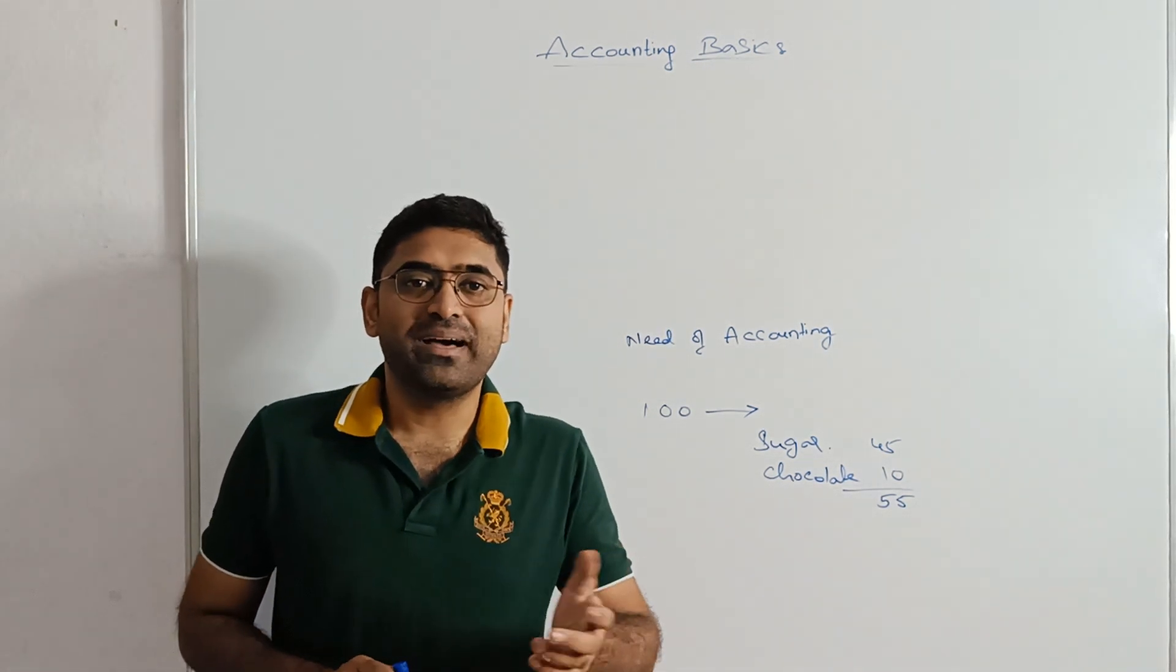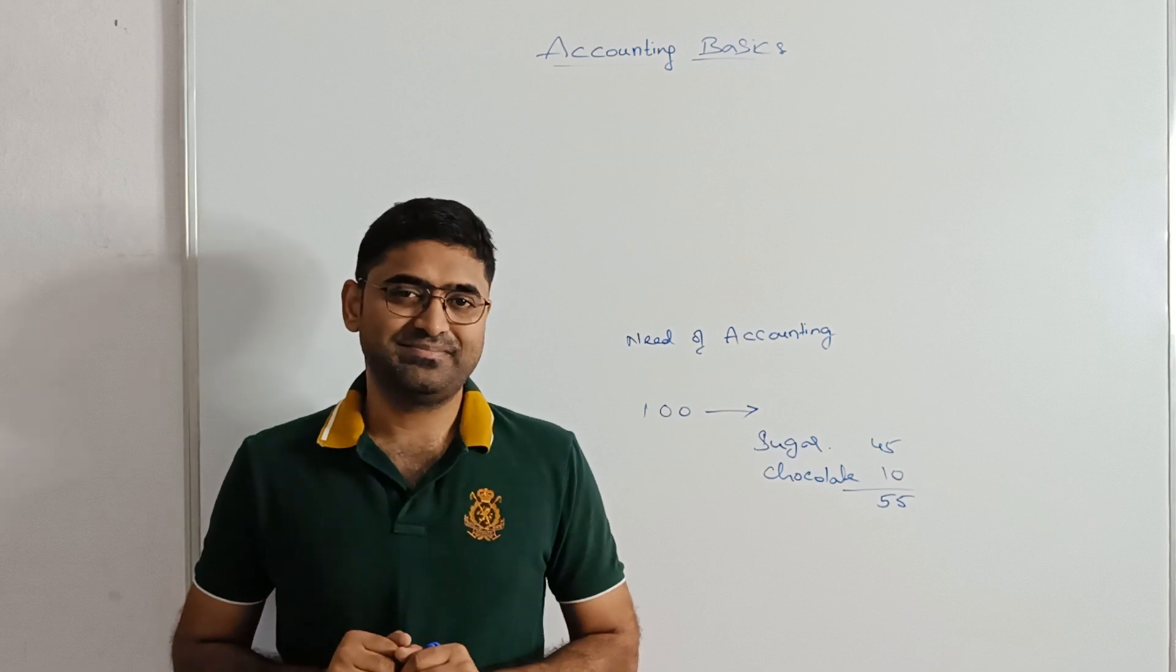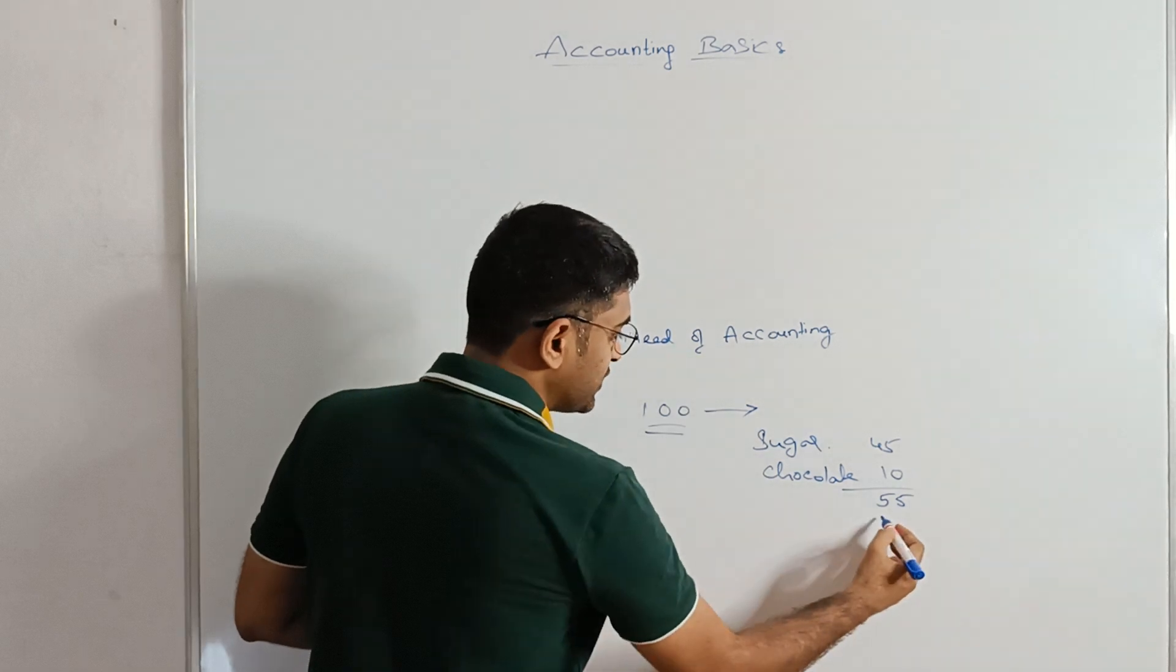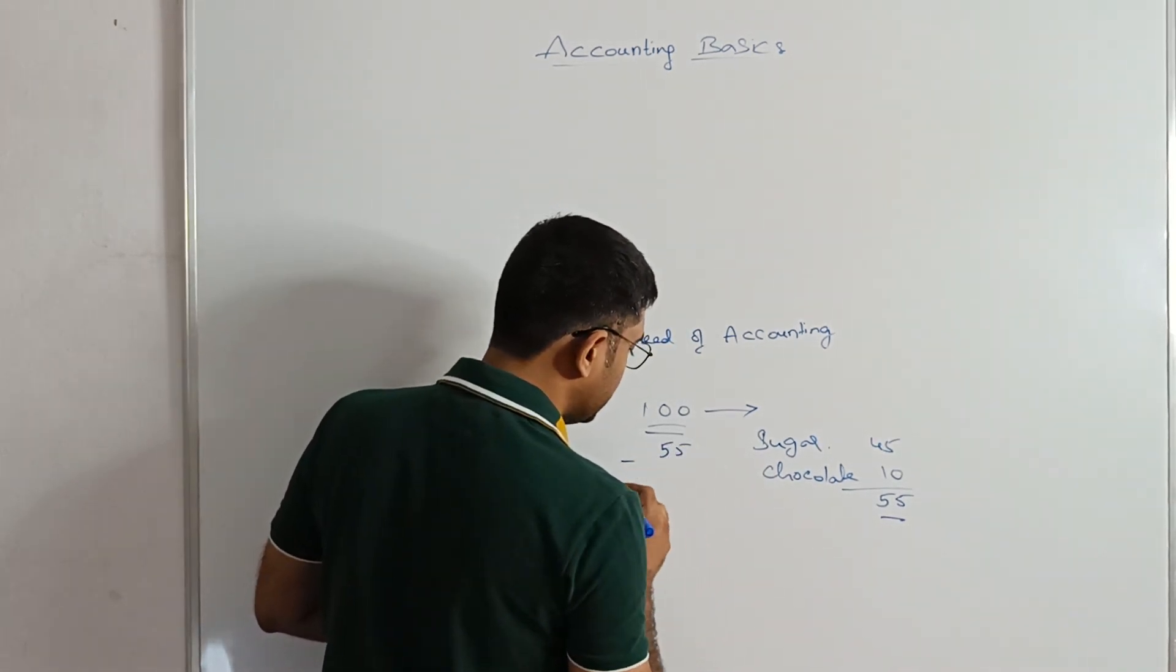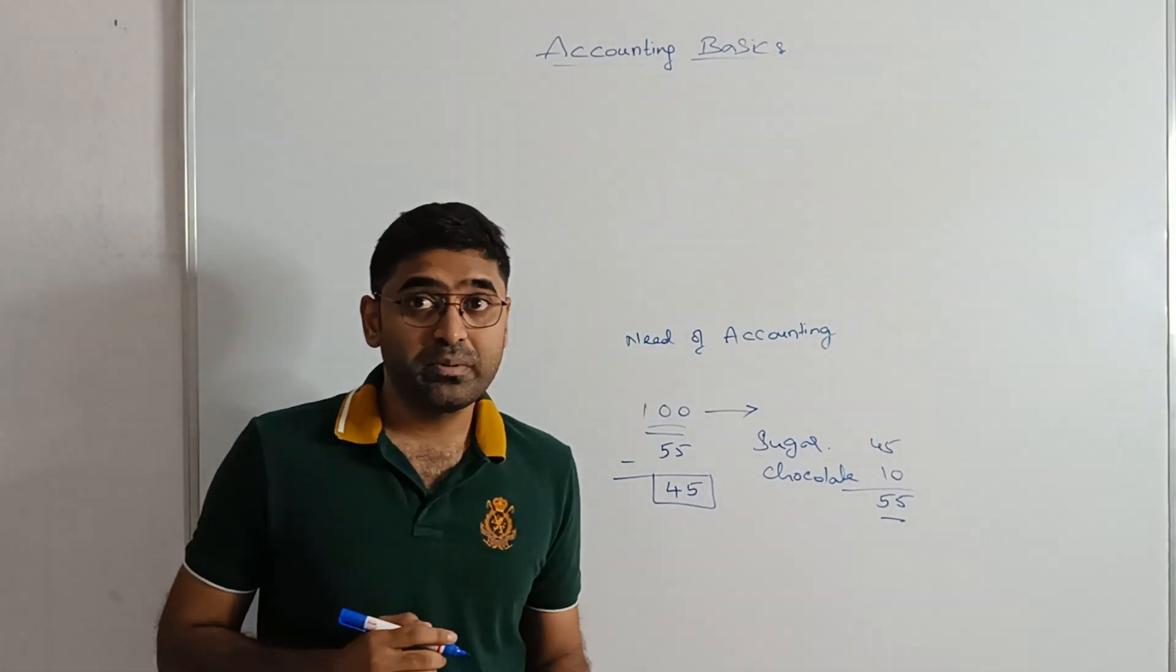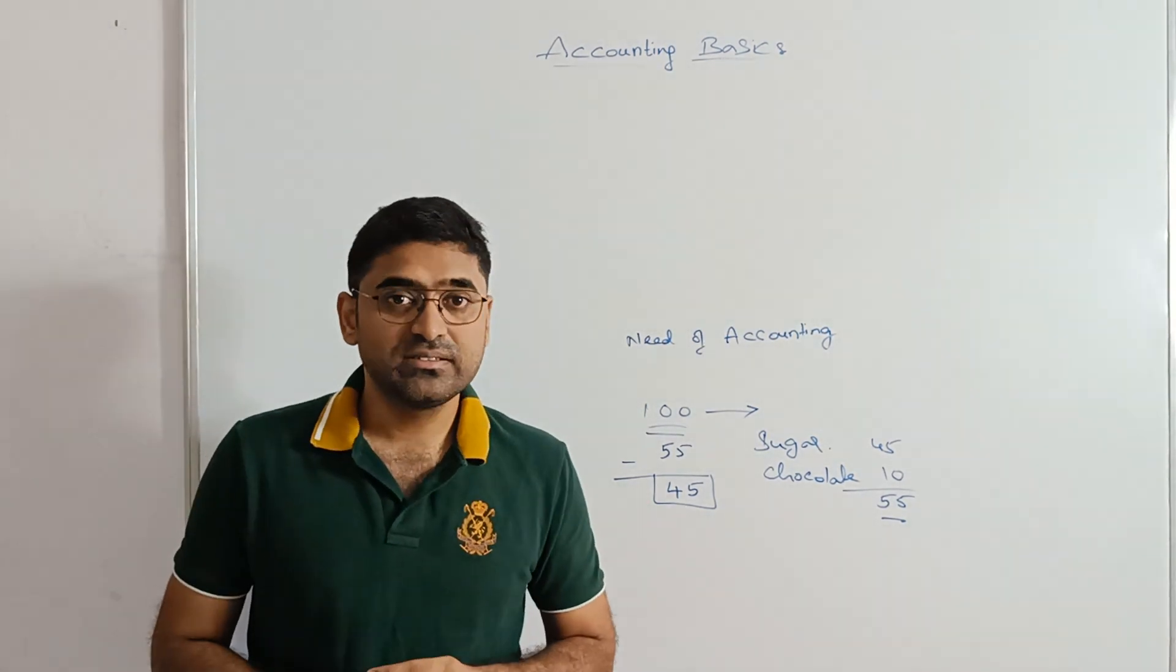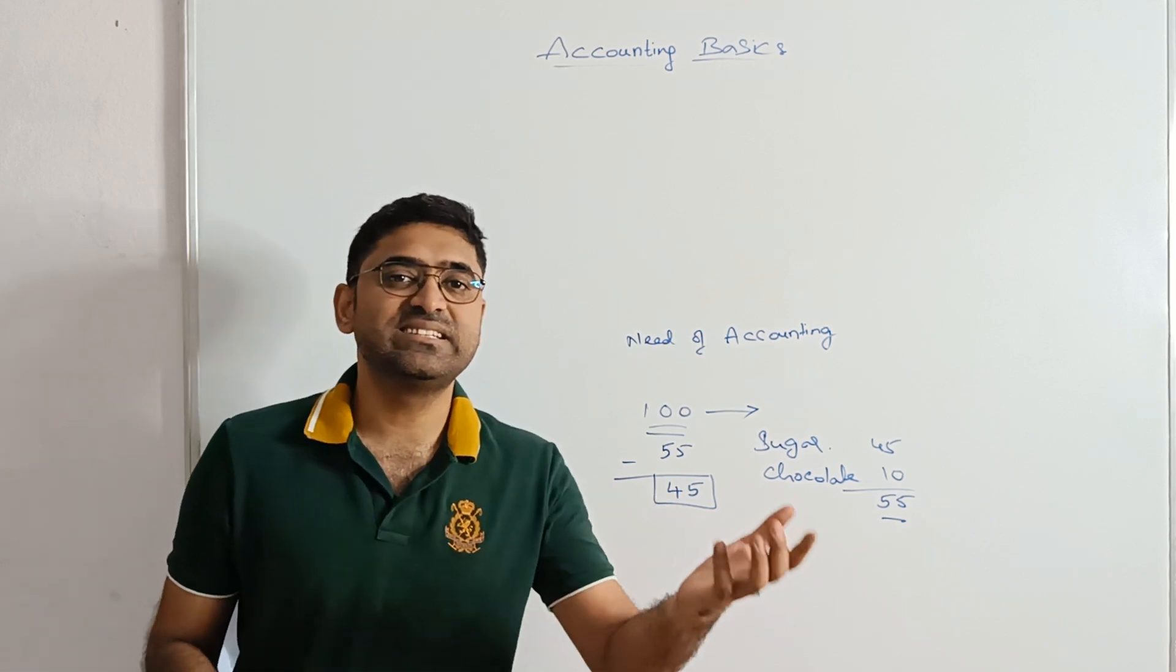Then she will ask, give me the balance. How much are you going to give her back? Yes, you initially have 100. After spending 55, you are going to have? Yes, 45. You are going to pay your mother 45. This is also kind of accounting, right? How much money you receive? How much you spend? And the balance is given back.